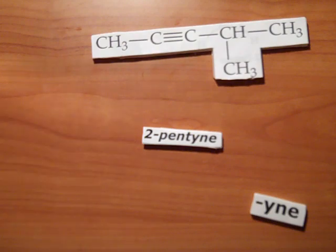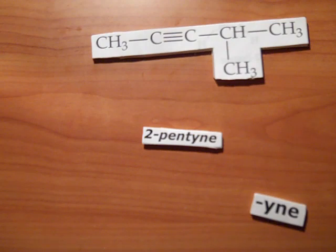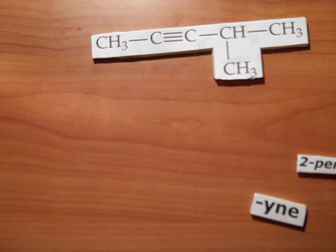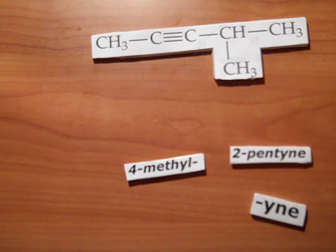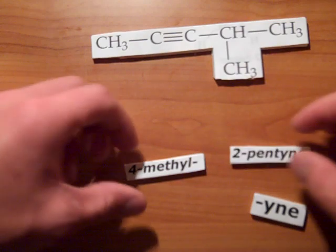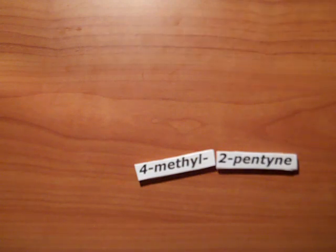And last, identify your substituent groups and their location in accordance to the triple bond. Here, the substituent methyl group is on the fourth carbon atom. Putting everything together now, our prefix is 4-methyl. Our base combined with our suffix is 2-pentyne. And therefore, our compound is named 4-methyl-2-pentyne. And that's how we name hydrocarbons. Thank you.